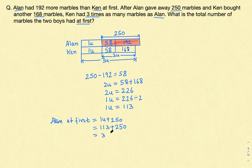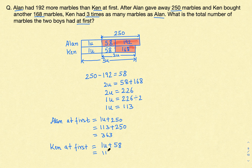Now how about Ken? How much was Ken having at first? The extra thing he added later was 168, so at first he was only having 1 unit plus 58. Calculating: 1 unit plus 58 is 113 plus 58, which equals 171. So Ken at first had 171 marbles.